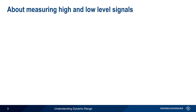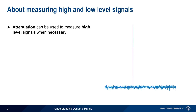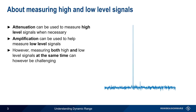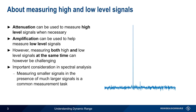The measurement of either very high or very low-level signals is fairly straightforward. Very high-level signals can be measured by attenuating them by a known amount. On the other hand, amplification can be used to more easily or more accurately measure very low-level signals. However, as we'll see in this presentation, the accurate measurement of both high and low-level signals at the same time can be very challenging. This is an important consideration in spectral analysis, since measuring very small signals in the presence of very large signals is a common measurement task.